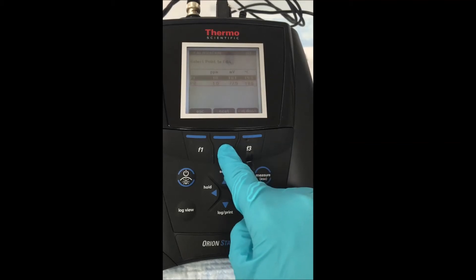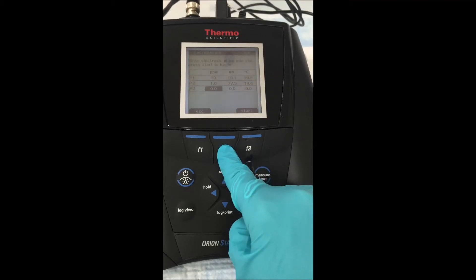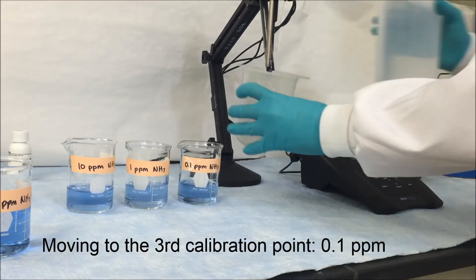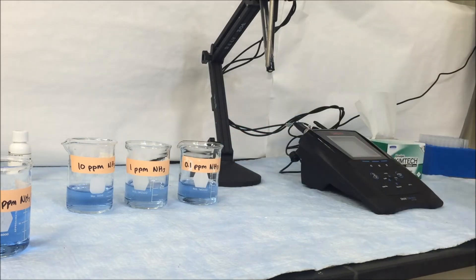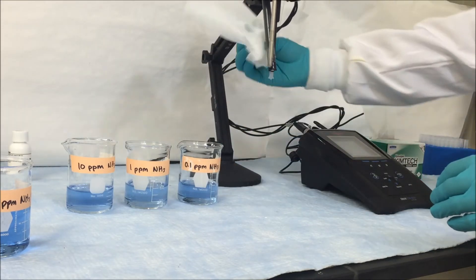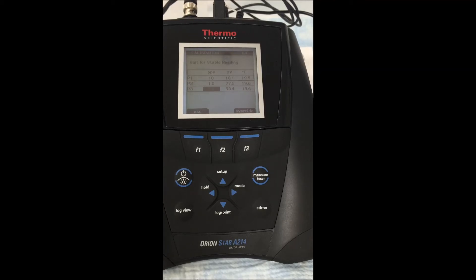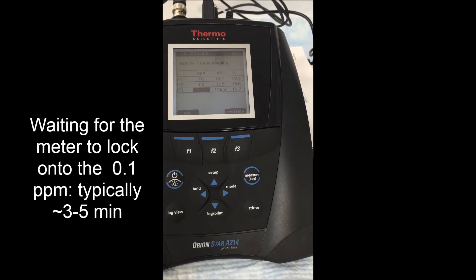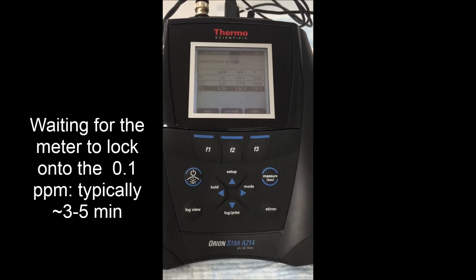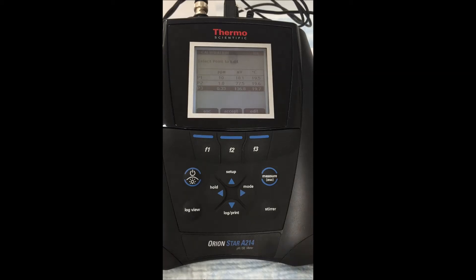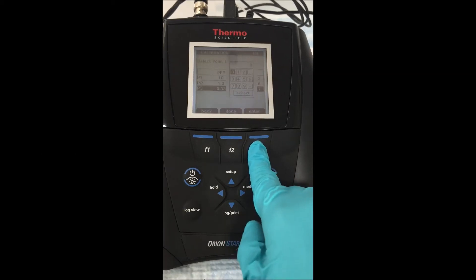We're going to remove our electrode from that 1 part per million solution. Again, making sure to rinse it thoroughly with deionized water to get all the old calibration standard off. We're going to place it into our lowest level standard. Generally speaking, when going into the last calibration point at a very low concentration, this reading may take a little bit longer. Generally about 3 to 5 minutes later, the meter is going to lock on to a value at which we're going to then again go in and edit it to say that it's 0.1 parts per million.